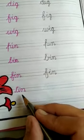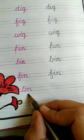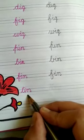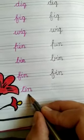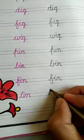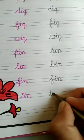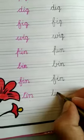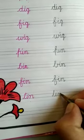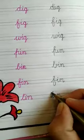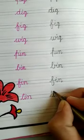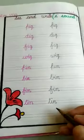Next word is ta, in — tin. So, write here: ta, in, tin. Okay children.